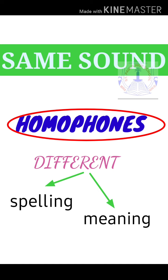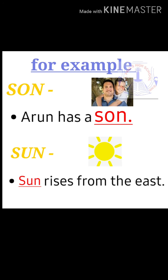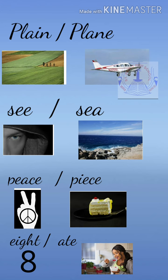Homophones: 'homo' means same and 'phone' means sound. So homophones are same-sounding words but different in spellings as well as meanings. For example: 'son' (S-O-N) and 'sun' (S-U-N). Both sound the same but the spelling and meaning are different. 'Son' — Arun has a son. 'Sun' — The sun rises from the east.